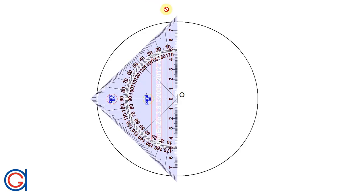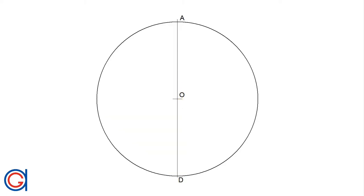The first step, we are going to draw a vertical diameter which cuts the circumference of the circle at two points A and D, as can be seen here.